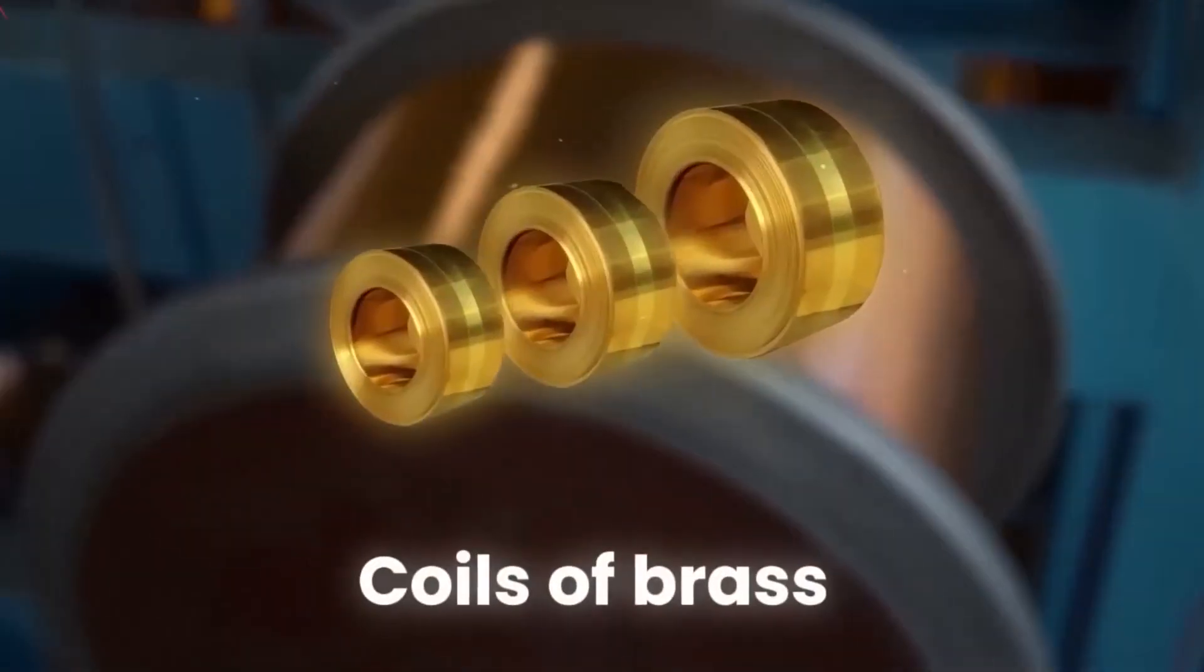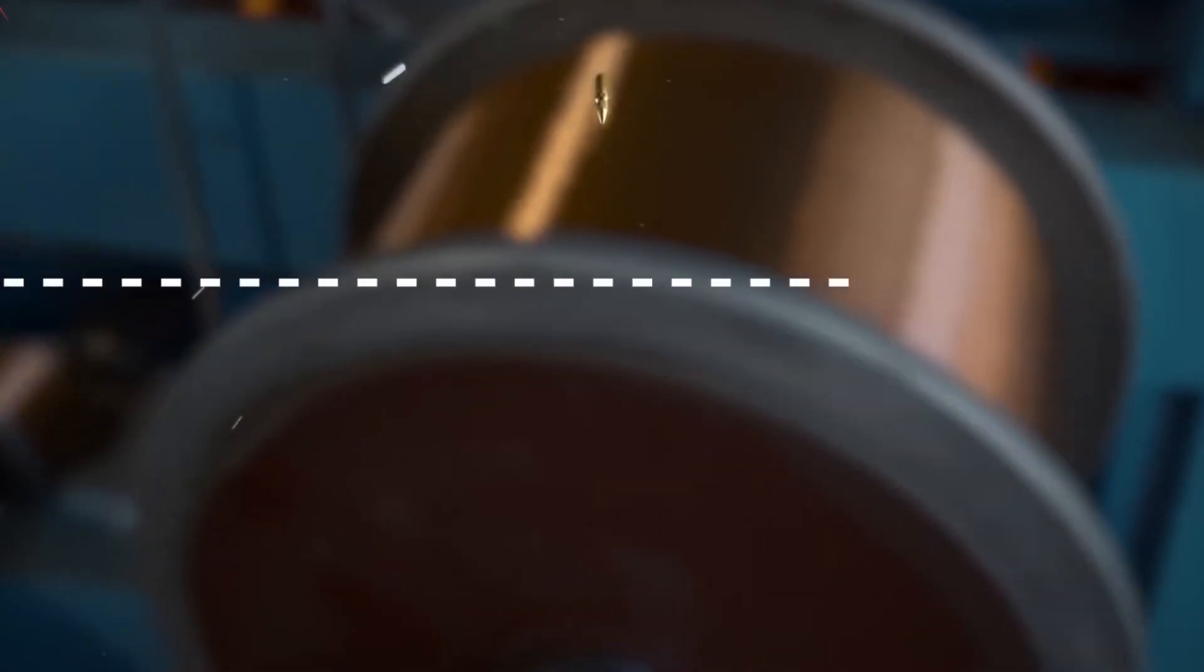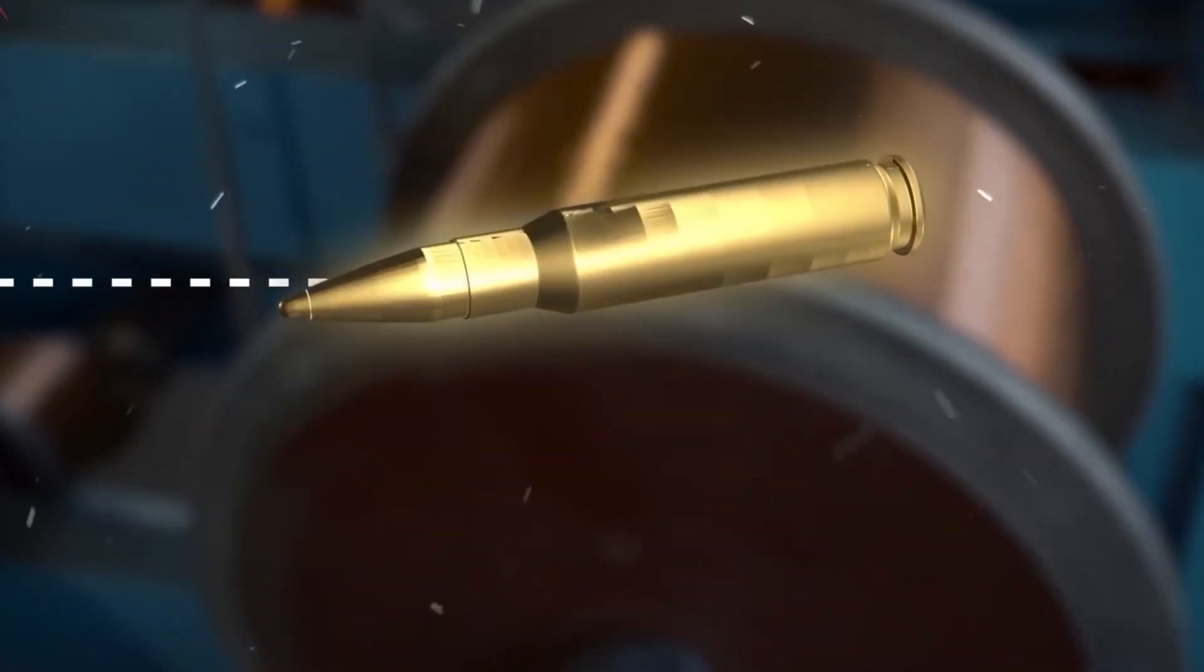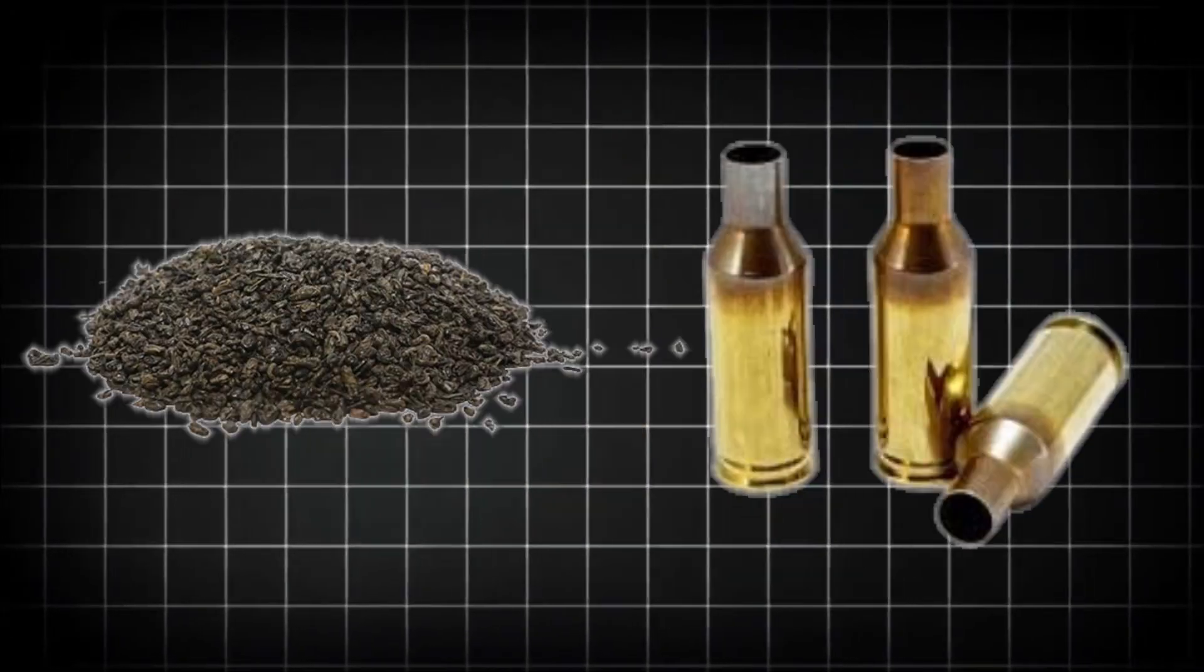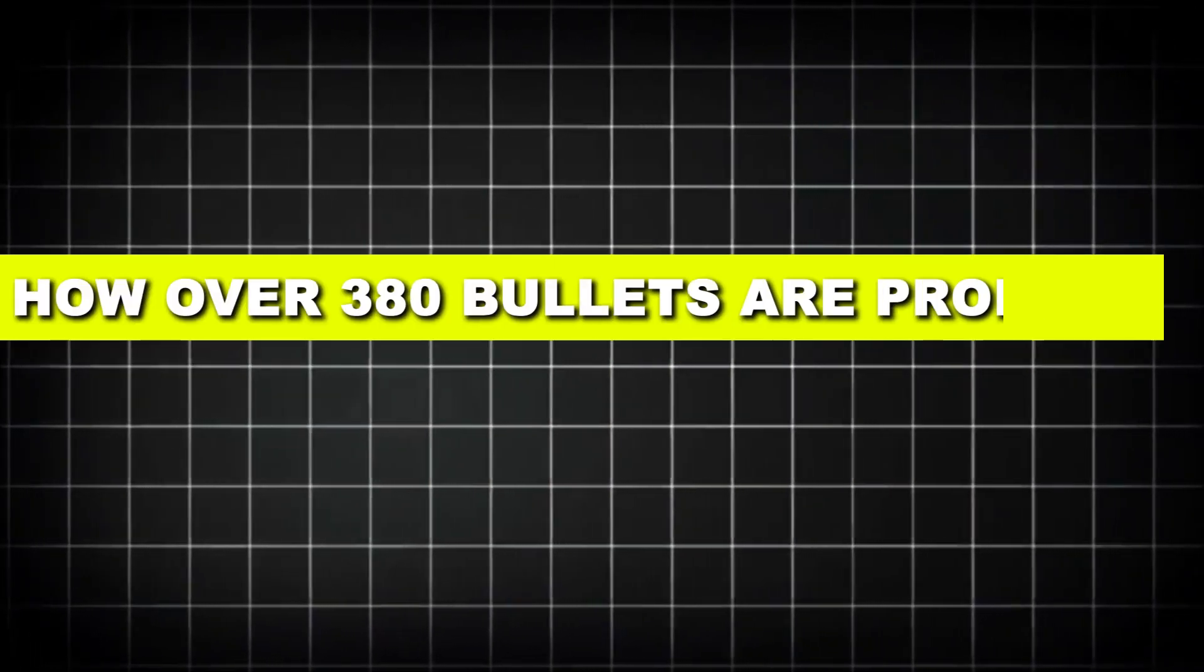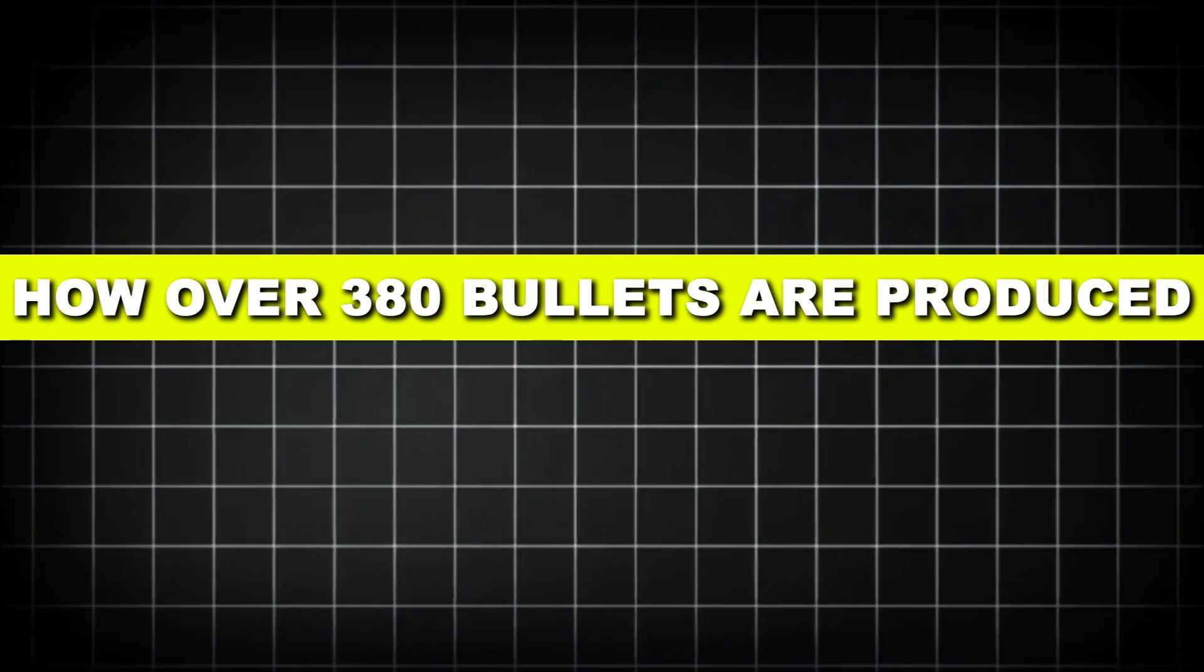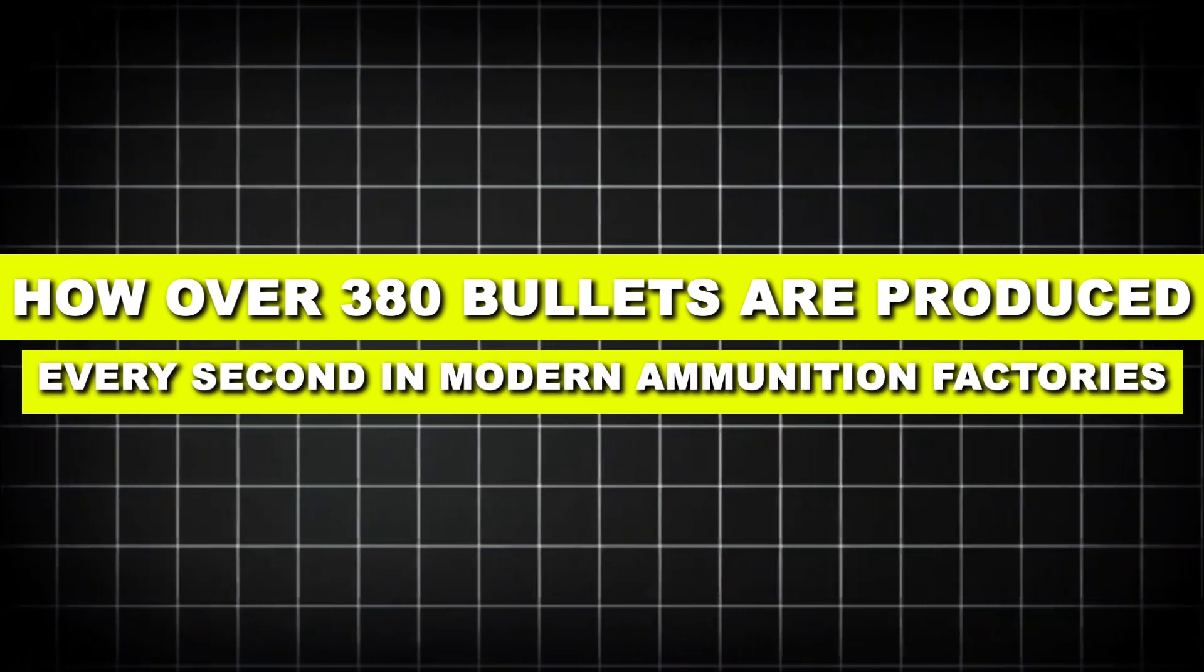But how does raw metal transform into the precisely engineered rounds that power everything from Olympic shooting competitions to military operations? From brass forming to powder loading, this is how over 380 bullets are produced every second in modern ammunition factories.